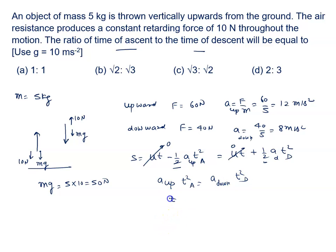So the ratio of time of ascent to time of descent is given by root of acceleration in the downward direction upon acceleration in the upward direction. What is acceleration in the downward direction? It is 8 and upward direction is 12.